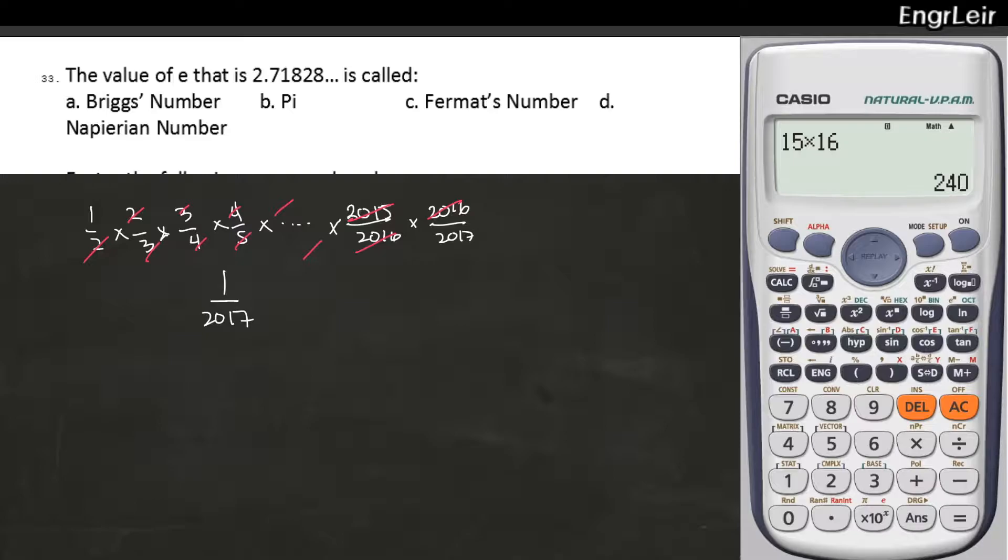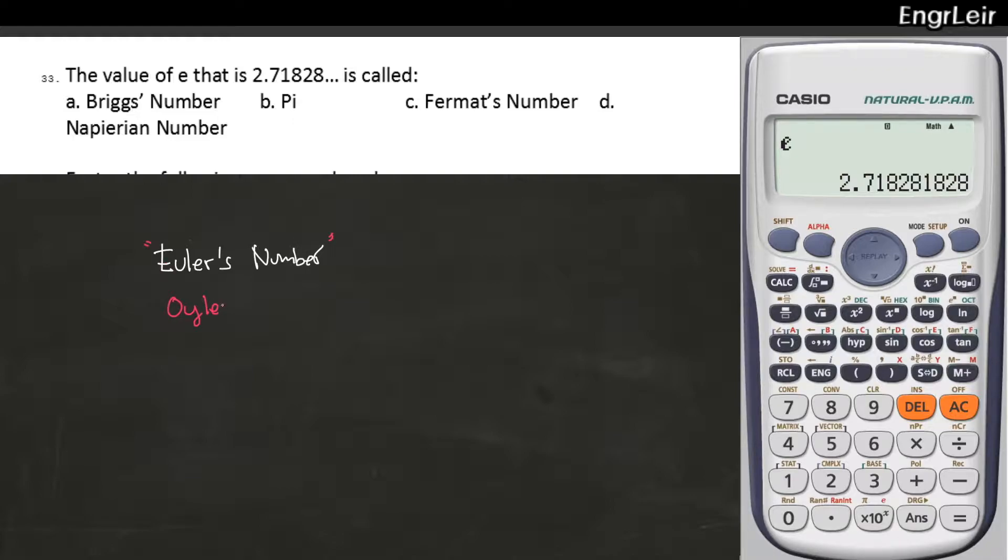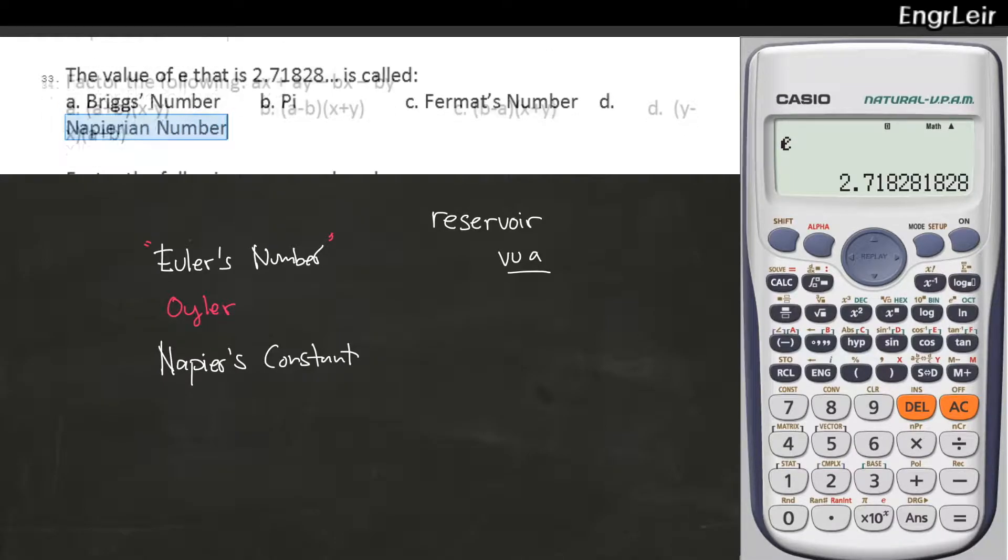So we have here number 33, which is an identification. Question number 33. The value of E, that is 2.71828 and so on, na nasa calculator. Ito yung mas mahabang version. The value of E is also called, okay? This is Euler's number. Euler's number. Euler. Ang basa ko dyan ay Euler. Actually, yun yung tamang basa. Okay? It's also known as Napier's constant. Pag tinignan natin yung choices, the Napierian number. But it's my first time encountering this term na Napierian number. I'm more familiar with Euler's number and Napier's constant. So siguro ito yung sagot, isa yung pinakamalapit doon sa Napier's constant.